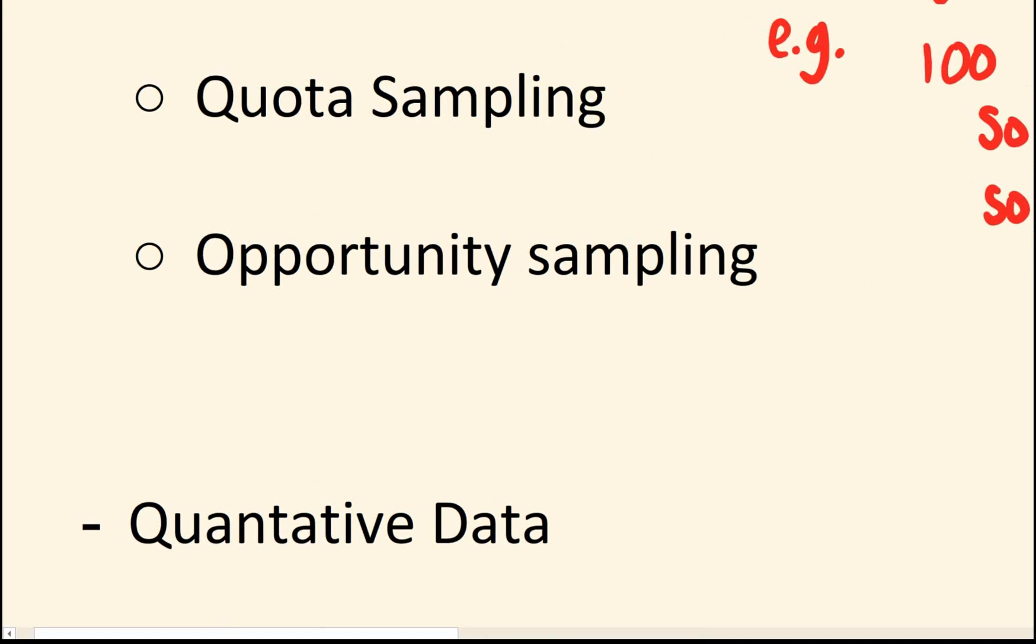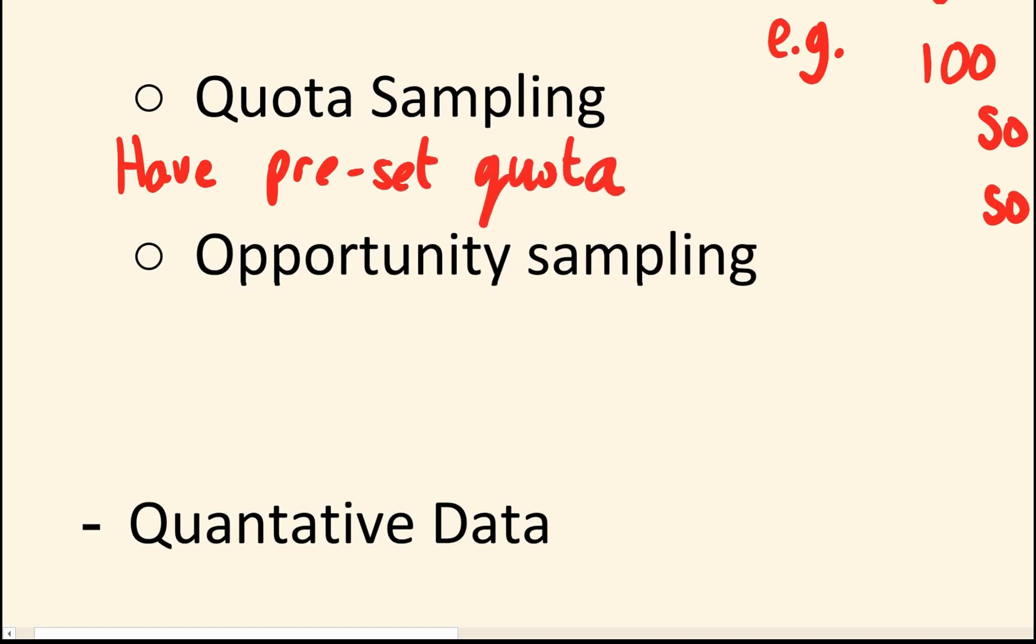So for quota sampling, you would basically have pre-set quotas for what you want to interview. So the advantage is fairly quickly set up. The downside is it of course could be biased. If your pre-set quota is not representative of the whole population, then you're going to introduce some bias there.